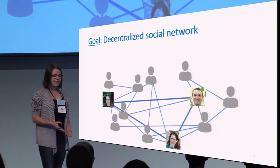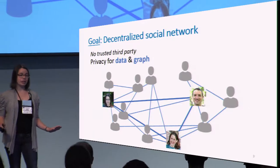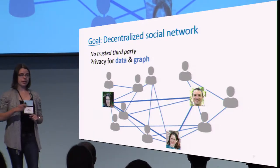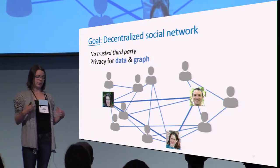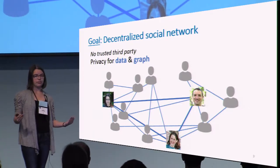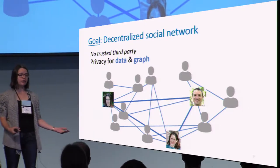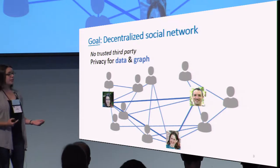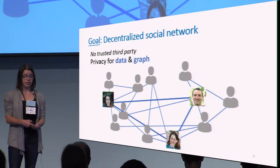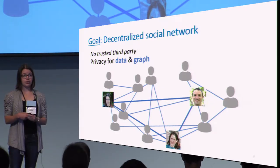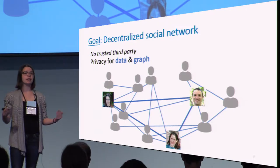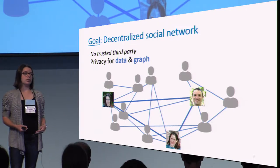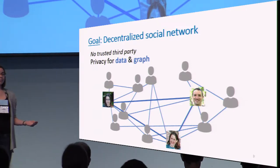In this model, we no longer have a trusted third party. You can talk to your friends, your friends can talk back to you, and you get privacy both for your personal information and for the social graph. So you don't need to reveal who all your friends are to anyone else.